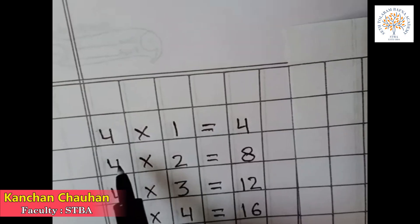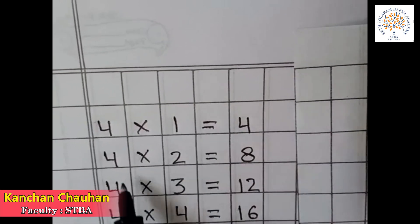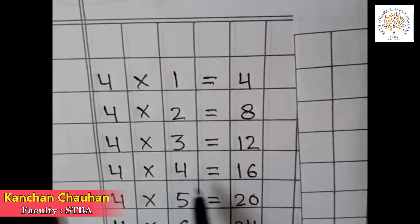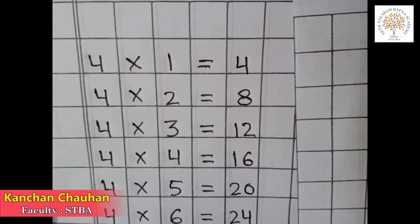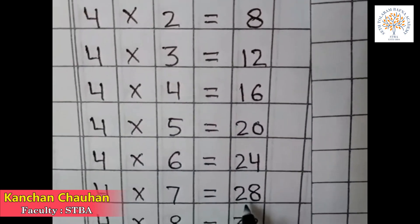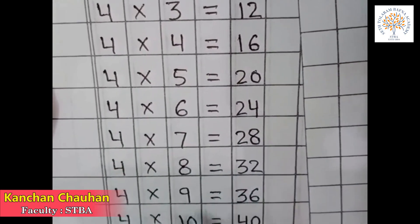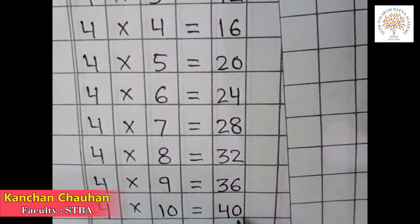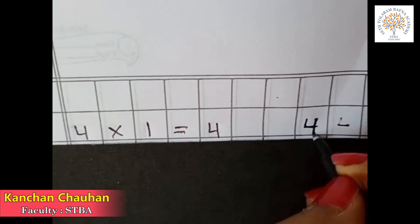Let's learn the table of 4. 4 1s are 4, 4 2s are 8, 4 3s are 12, 4 4s are 16, 4 5s are 20, 4 6s are 24, 4 7s are 28, 4 8s are 32, 4 9s are 36, 4 10s are 40. 4 1s are 4 means 1 times 4.